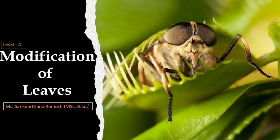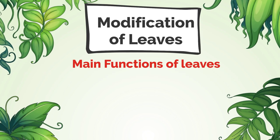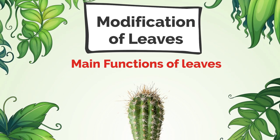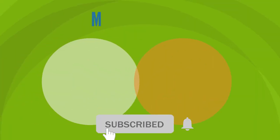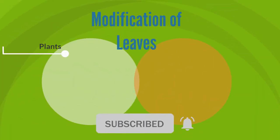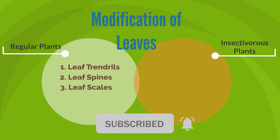Modification of leaves is one of the main functions of leaves — some leaves get modified to perform special functions. Modification takes place in both regular plants and insectivorous plants. Regular plants show three types of modifications: leaf tendrils, leaf spines, and leaf scales.